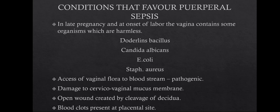Moving on to the conditions that favor puerperal sepsis: in late pregnancy or before the onset of labor, certain organisms are present in the vagina — called vaginal flora — which are completely harmless. These organisms include Doderlein's bacillus, Candida albicans, Escherichia coli, Streptococcus, Staphylococcus aureus, and so on. But if by any means this vaginal flora gains access to the bloodstream, they turn pathogenic and may cause infection to the host.